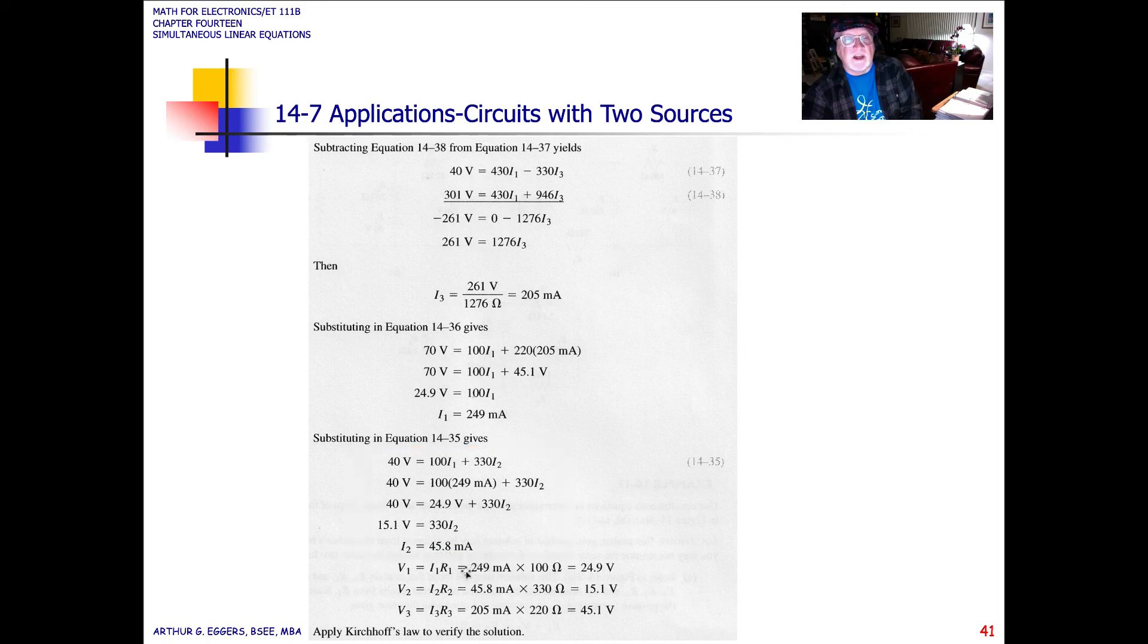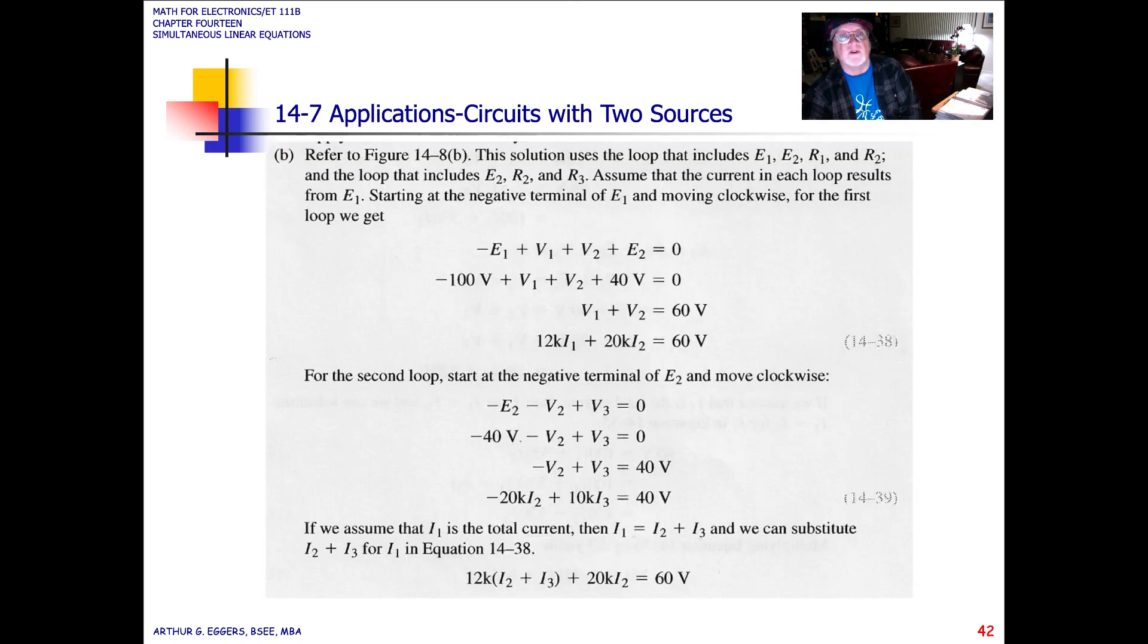The next step then is to calculate our voltage drops. Each of our voltage drops then, V1 is equal to I1 R1, as we've seen before. Put in our values, and we end up with 24.9 for V2, 15.1, for V3, 45.1 volts. So we've gotten all of our currents, we've gotten all of our voltage drops, we already knew our source voltage.